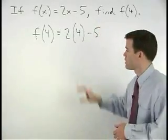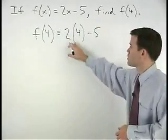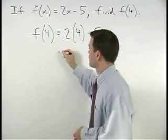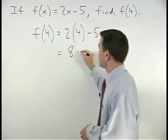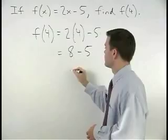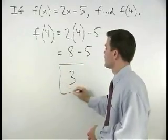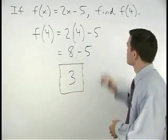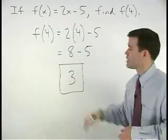Now all we have to do is simplify on the right side. 2 times 4 is 8, so we have 8 minus 5, which is 3. So f of 4 is 3.